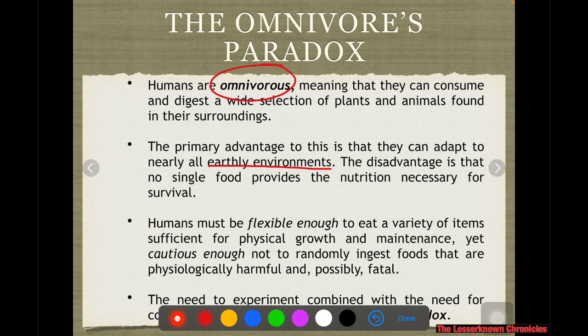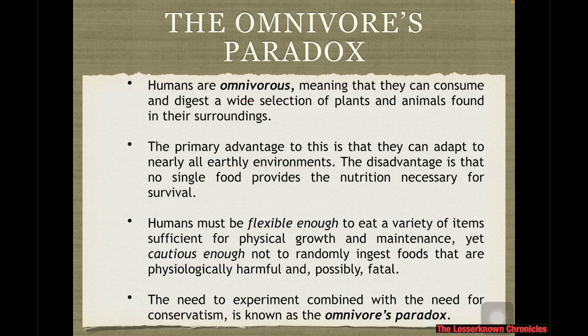The disadvantage is there is no single food that will provide us with all our nutrition, so we have to consume a little bit of everything to have complete nutrition on a daily basis. We are flexible enough to eat a variety of items sufficient for our physical growth, but we also have to be cautious not to randomly ingest foods which are harmful or possibly fatal to us. The need to experiment combined with the need for conservatism is what we call the omnivore's paradox.